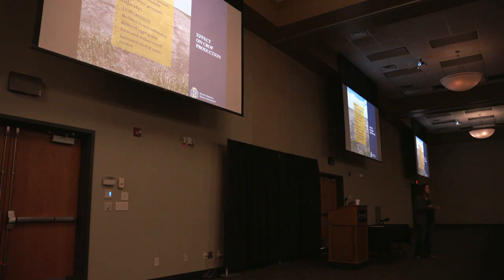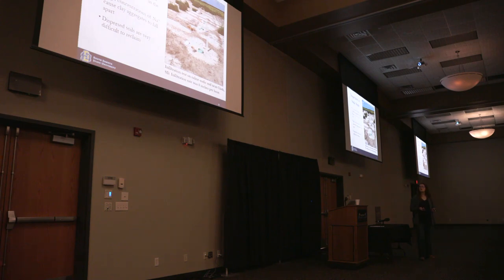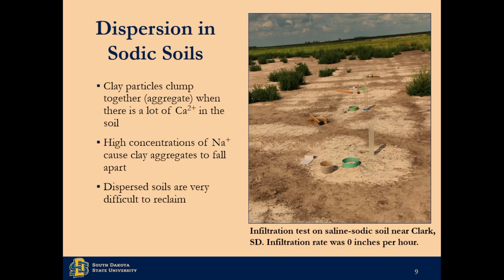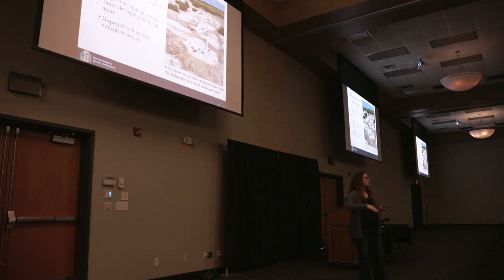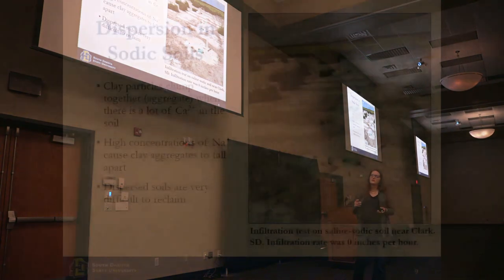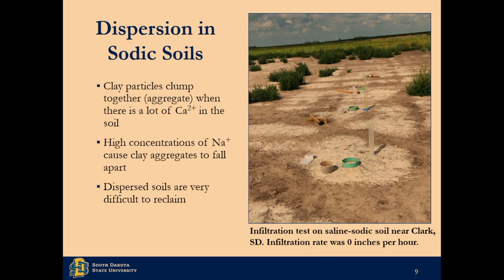Once a soil is dispersed, it's hard to get it to aggregate again — so it's better not to get to this point. We can look at soil concrete where clay particles come together and form aggregates that give us water infiltration, pore space, and happy microbes. We did an infiltration test — has anybody done single ring infiltration on their farm? You get a PVC ring and monitor the infiltration rate over time. When we tried to determine the infiltration rate of a saline-sodic soil, it was really easy — it was zero inches per hour. The water went nowhere. Infiltration is incredibly important for crop production and soil health.